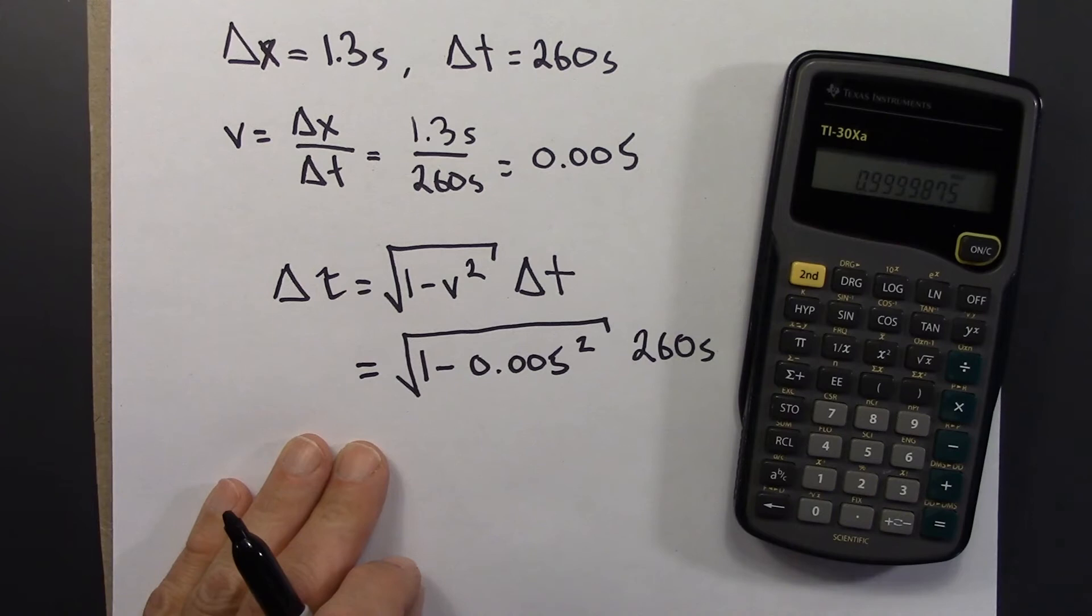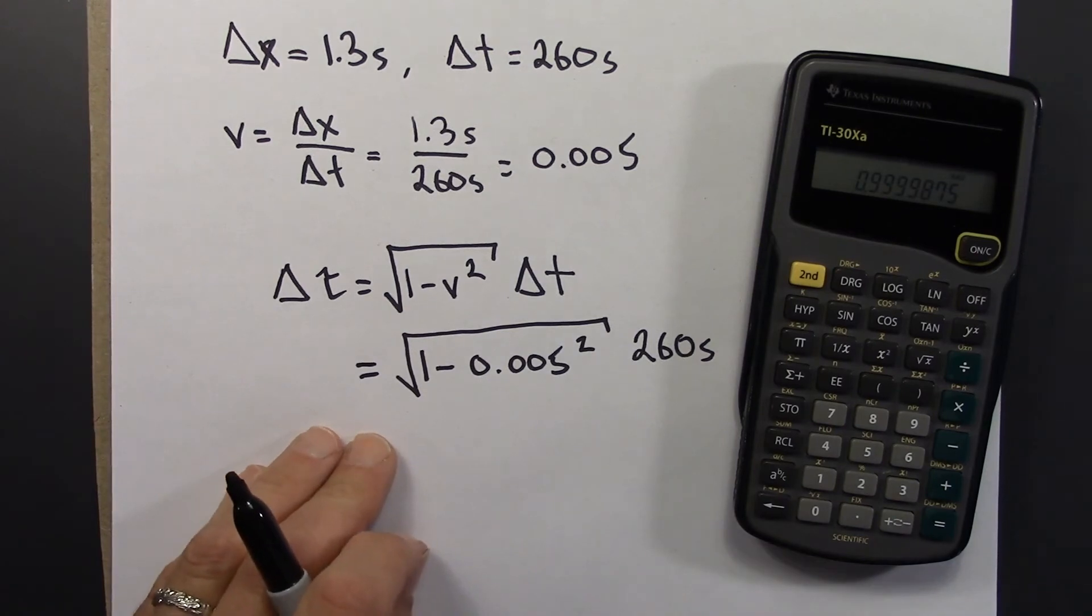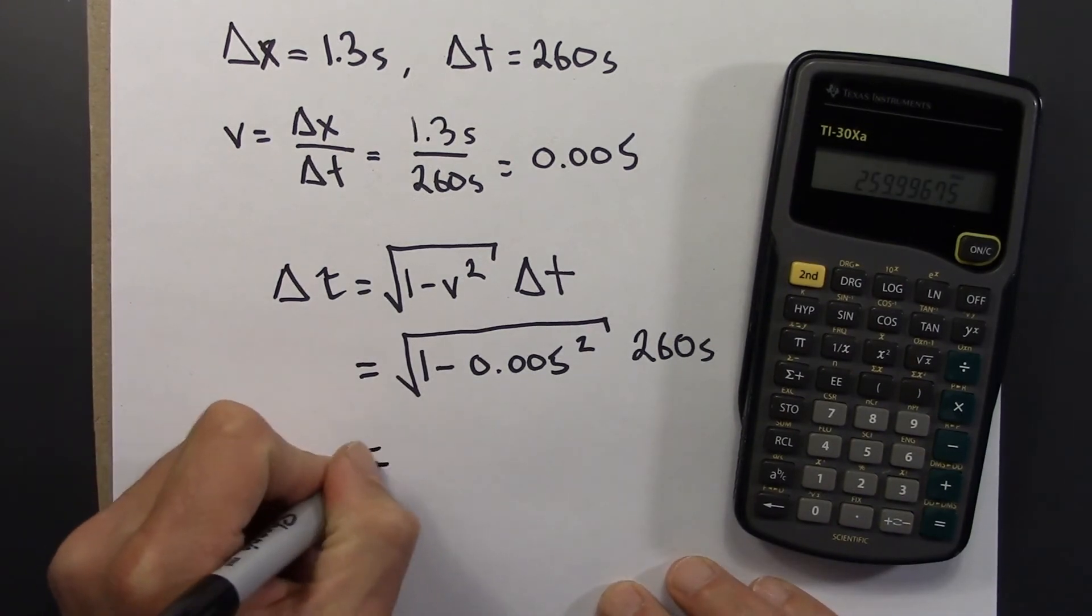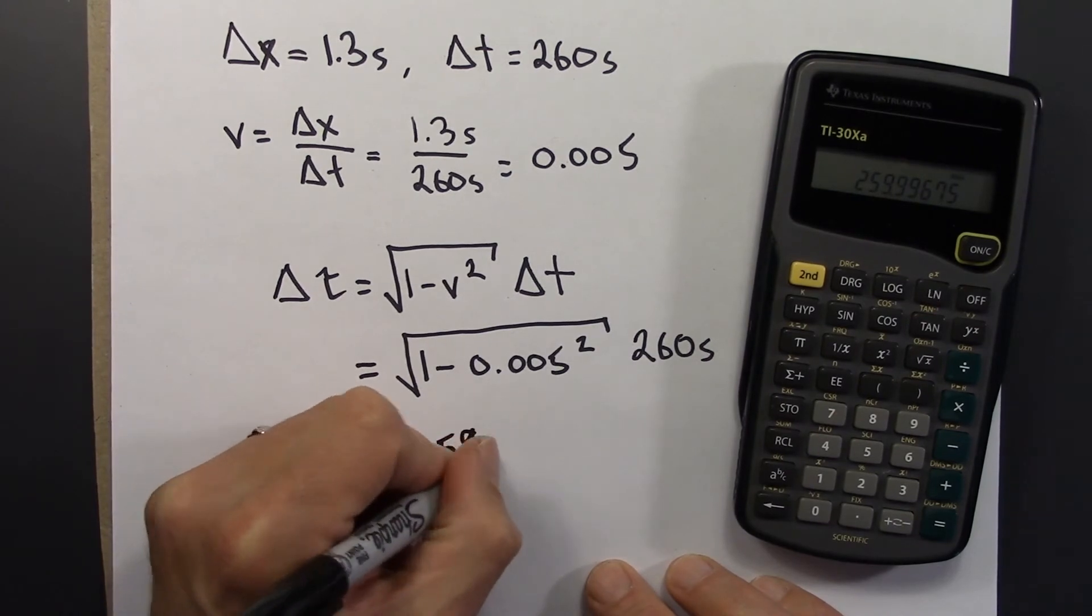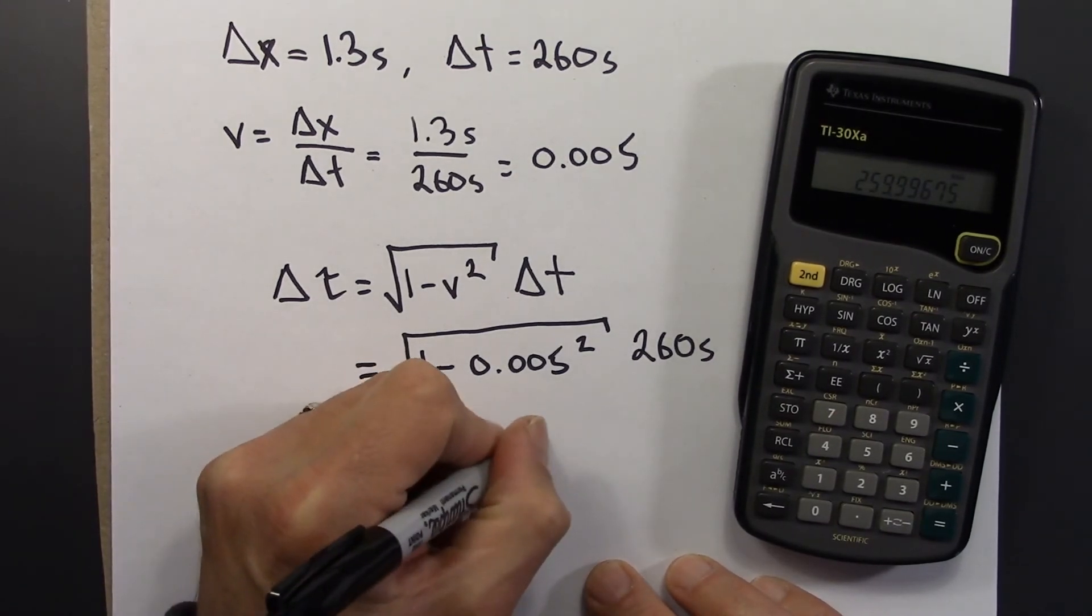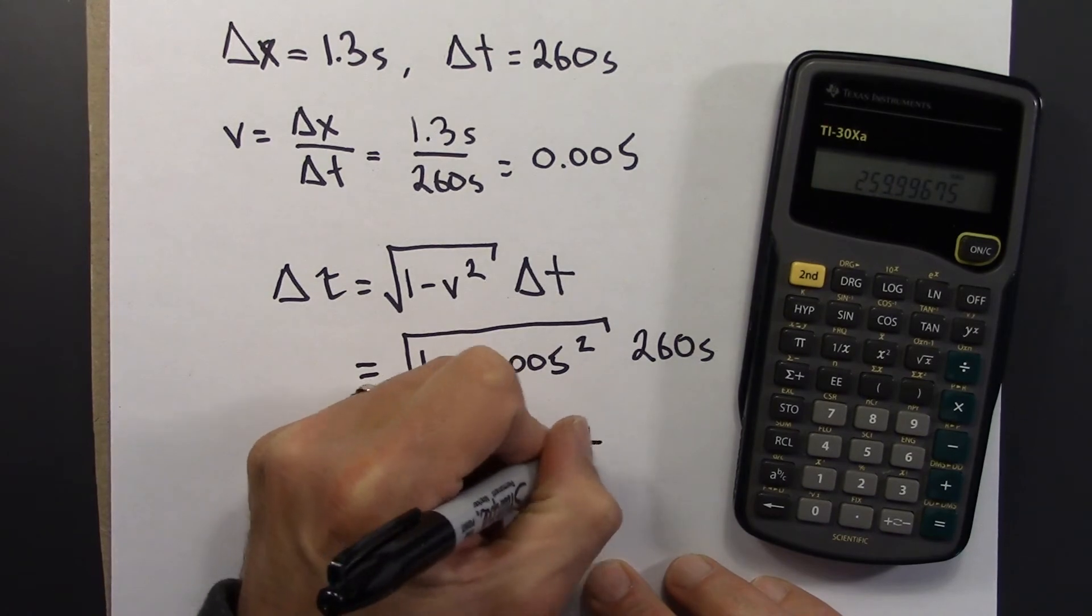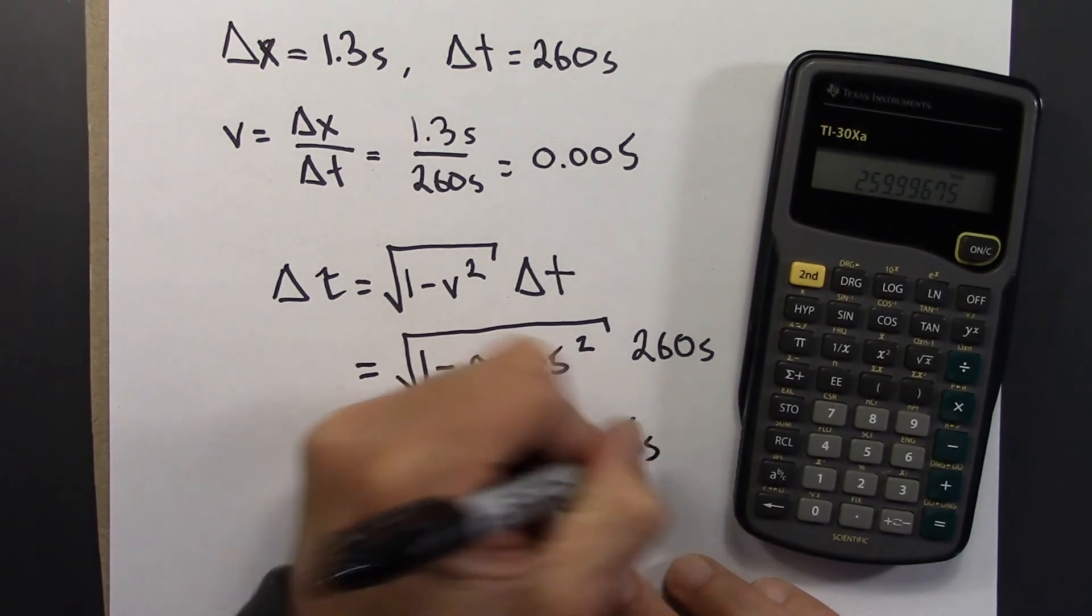Then I square root 0.9999875, even closer to 1. And then the last step, I need to multiply this by 260 seconds. And I get this number, 259.99675 seconds.